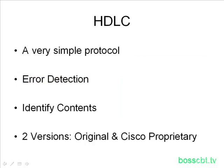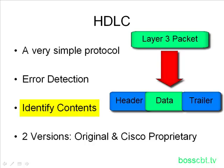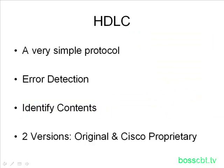The HDLC frame will attempt to identify its data. The layer 3 packet is put into a layer 2 frame, and the layer 3 protocol used needs to be identified. When we talk about identifying the contents of the HDLC frame, we have to discuss two versions of HDLC — the original standard implementation and the Cisco proprietary version. This is where it gets a bit nuanced.